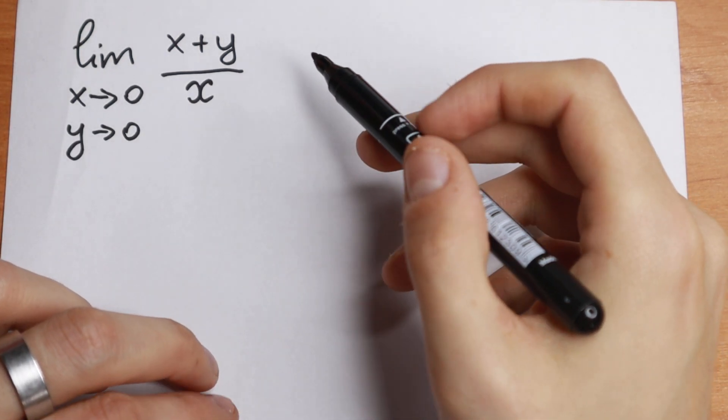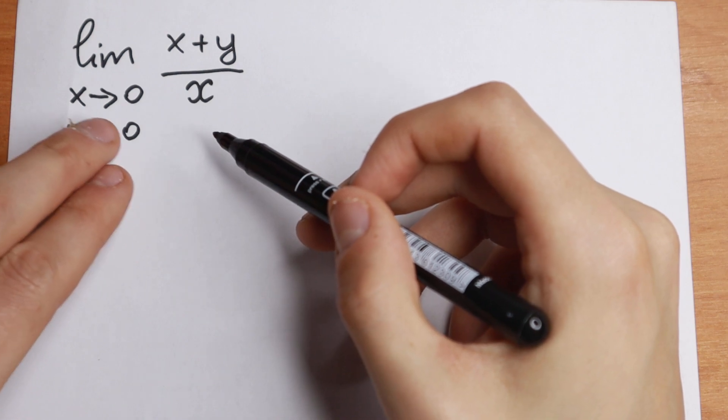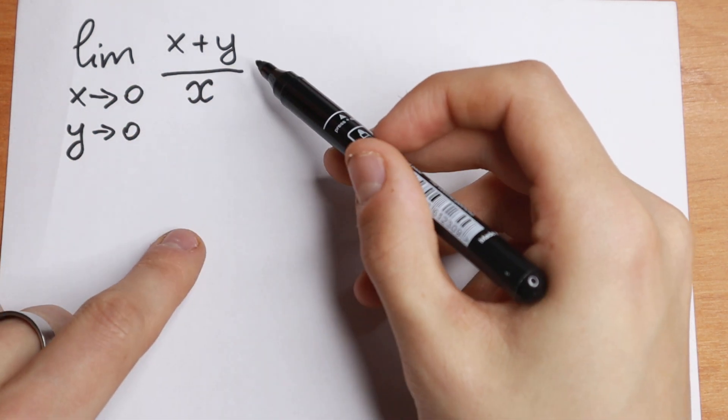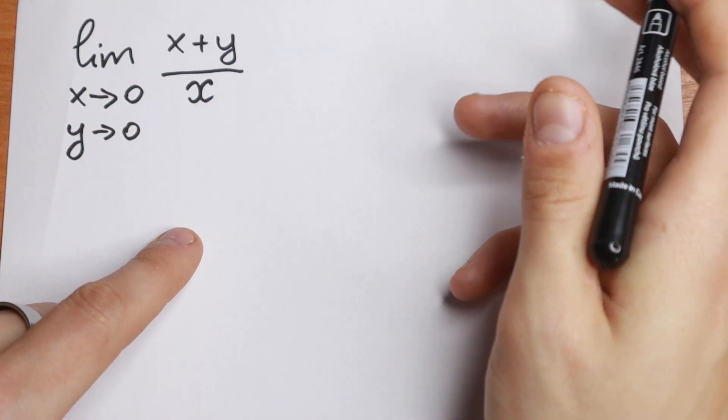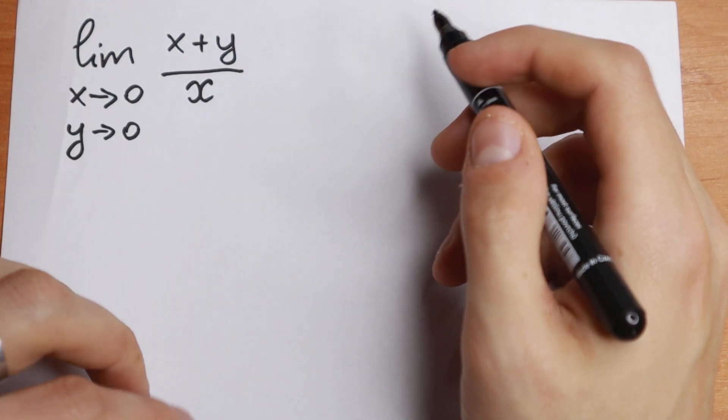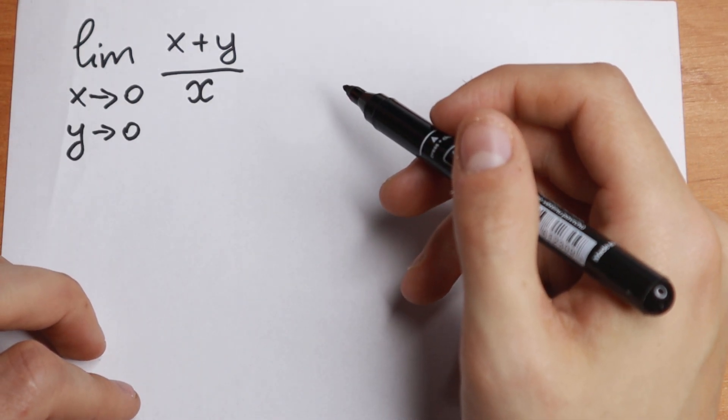How can we find this limit? First of all, we can put this 0 and 0 right here, and we will have 0 over 0, which is undefined. So we need to find another way, another approach how to solve it.